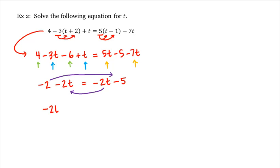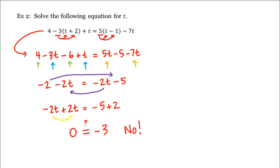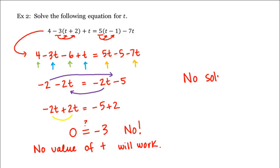We have negative 2t plus 2t is equal to negative 5 plus 2, which is negative 3. That means that no value of t will work. No matter what value of t we try to plug into this equation, we will never get a true statement. Our answer would be no solution, because there's no value of t that will satisfy this equation.